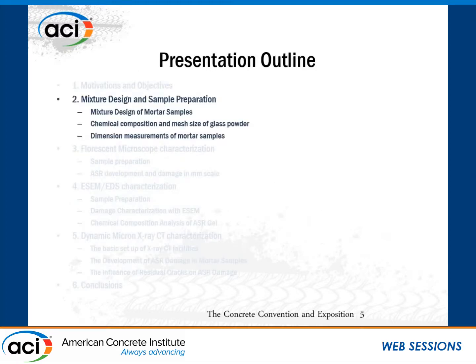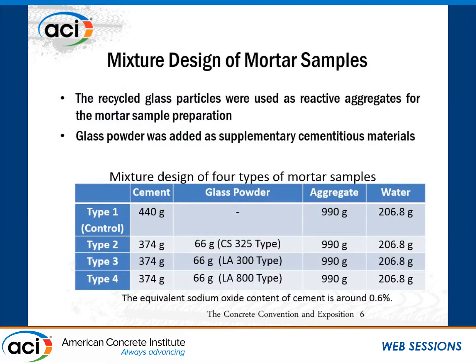Let me introduce how we prepared the samples and how we evaluated the expansion potential of the mortar samples. There are four different types of mortar samples prepared in this study. The first one is control samples without any supplementary cementitious materials. And types 2 through 4 contain three different types of glass powder to mitigate the ASR damage.